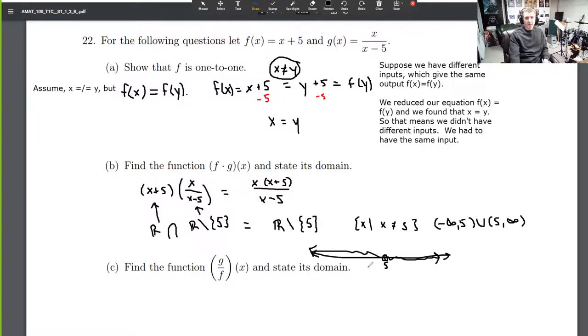Part C. Find the function g over f of x and state its domain. So we're just taking g, x over x minus 5, we're dividing that by x plus 5. Well, x plus 5 is no different than x plus 5 divided by 1. So now we've got a division of fractions. But remember, nobody divides by fractions. Everybody multiplies by reciprocals of fractions. So we're going to take the denominator and multiply by its reciprocal. And we get x over x minus 5 times x plus 5, which is x squared minus 25. That's it. That's g over f. State its domain.